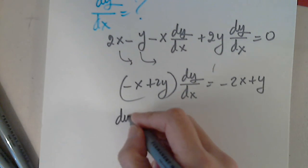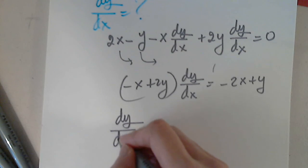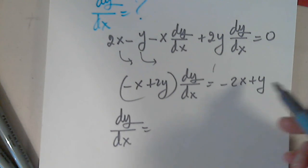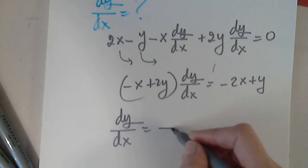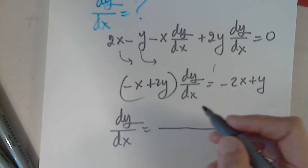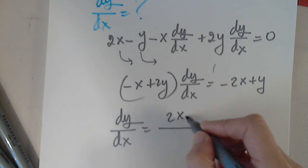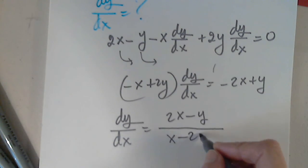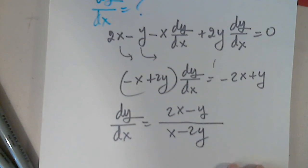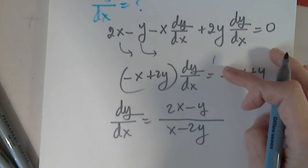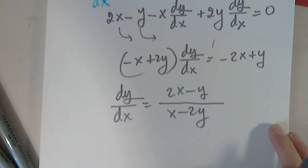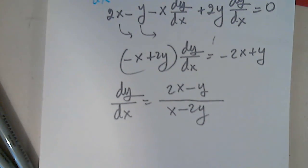Finally, dy/dx equals — I'll factor out negative 1 from the top to get 2x minus y, and factor out negative 1 from the denominator to get x minus 2y. The two negatives cancel each other out.